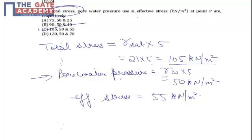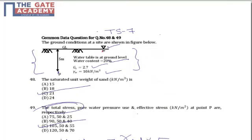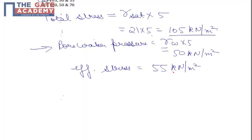If we talk about pore water pressure, it is given by gamma w into height of water column, which is 5 meters in our case since the water table is located at ground level, or 5 meters above point P. As a result, pore water pressure comes out as 50 kilonewton per meter square.